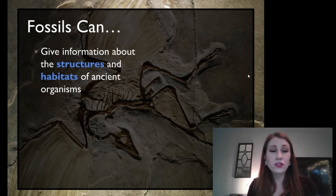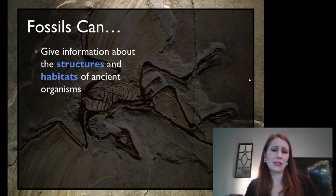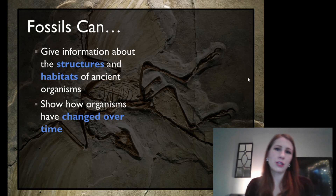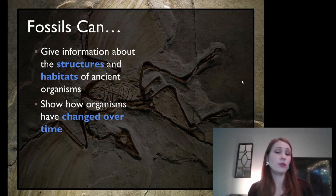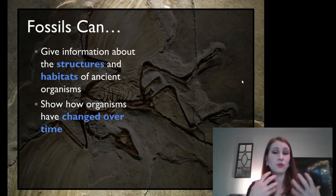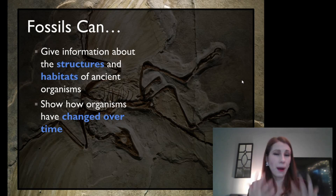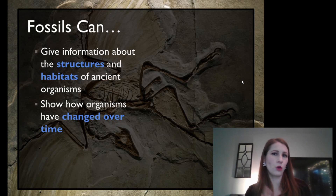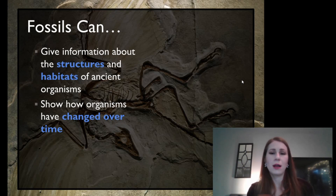Fossils give us information about the structures and habitats of ancient organisms. They can also give us information about what they ate, because you can sometimes see that in the way their teeth are formed, their claws, beaks, things like that. Fossils also show us how organisms have changed over time — this is essentially evolution. Evolution as a biological concept is talking about the change in the physical traits and alleles of a species or population over time. We're looking at an entire population of organisms, not just one single animal or plant. We're looking at how their whole population changes over time.